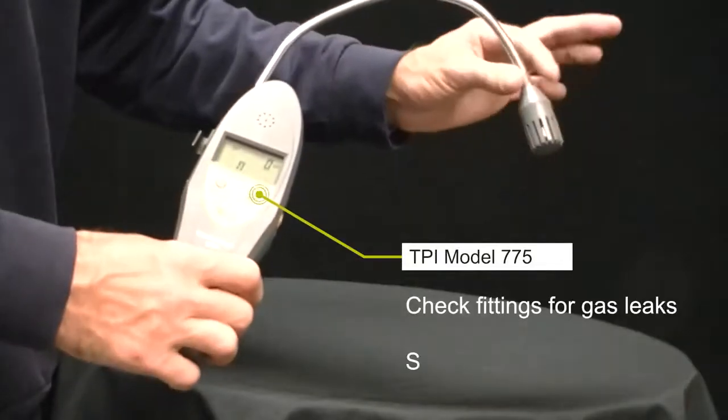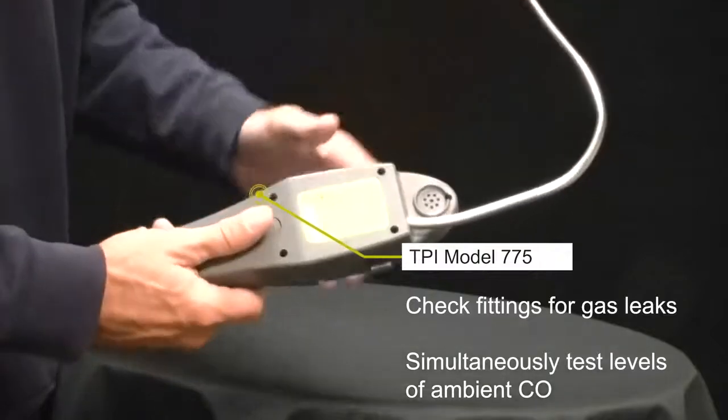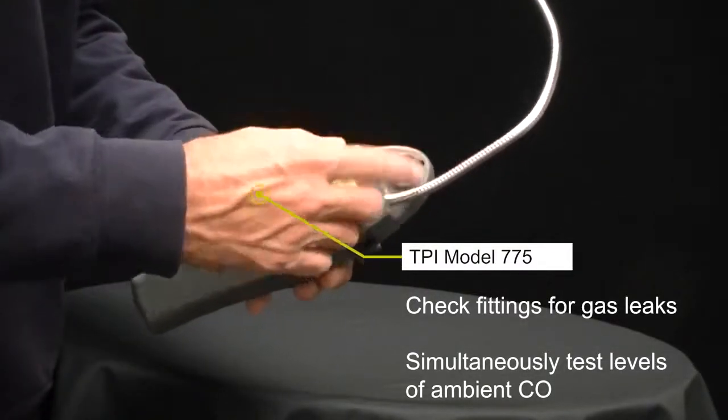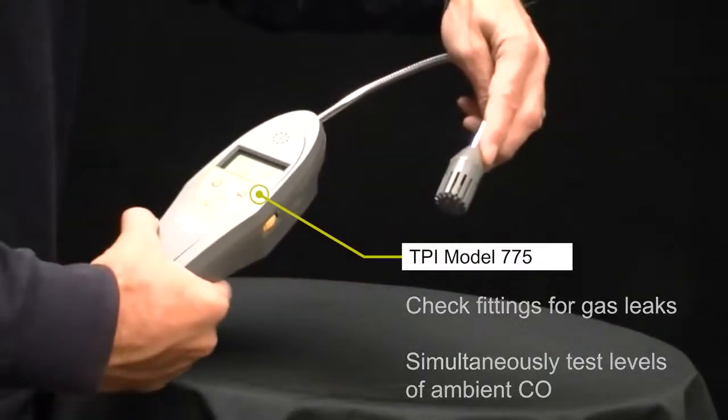What I really like about the Model 775 is the ability to check fittings for gas leaks while also checking for ambient levels of carbon monoxide.